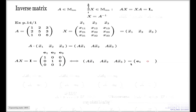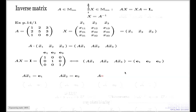Equating columns on the left-hand side to columns on the right-hand side gives three vector equations: AX1 = E1, AX2 = E2, AX3 = E3. So rather than having nine equations with nine unknowns, I have three vector equations with three vector unknowns. I didn't do much differently from before — I just combined the nine equations into three groups, one for each column.